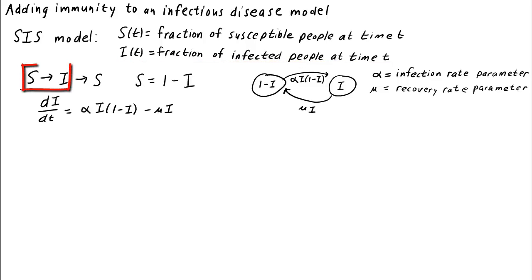In this model, susceptible people could become infected upon contact with an infected person, and when an infected person recovered, they would become susceptible again, able to get the disease once more if they contacted another infected person.